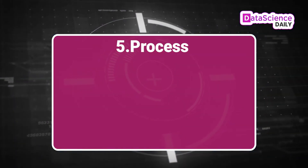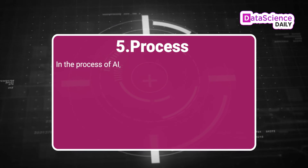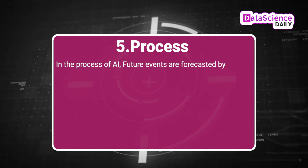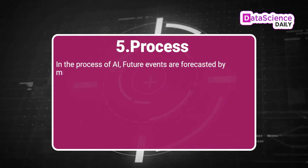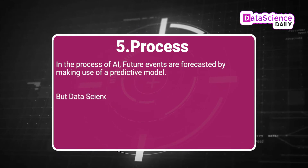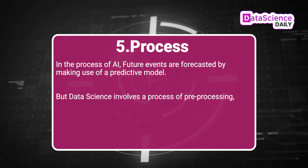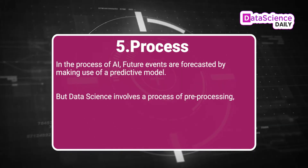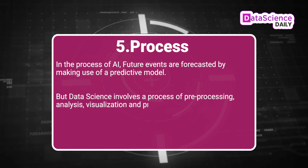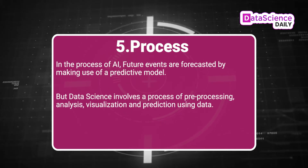5. PROCESS — In the process of AI, future events are forecasted by making use of a predictive model. But data science involves a process of pre-processing, analysis, visualization, and prediction using data.